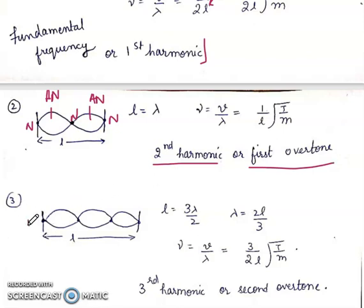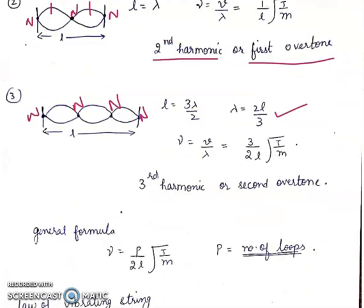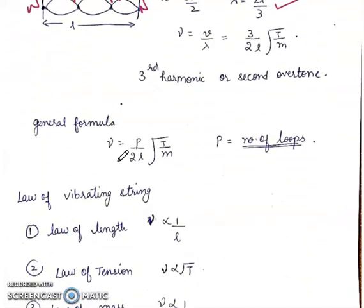Third case: four nodes. Length L = 3λ/2, so λ = 2L/3. Frequency ν = V/λ = (3/2L)√(T/M). This is the third harmonic or second overtone. In general, the formula is ν = (P/2L)√(T/M), where P is the number of loops.